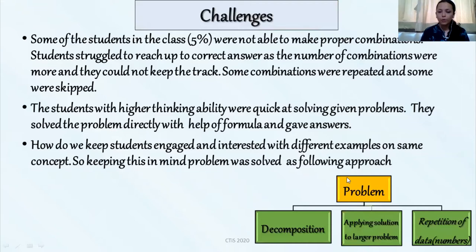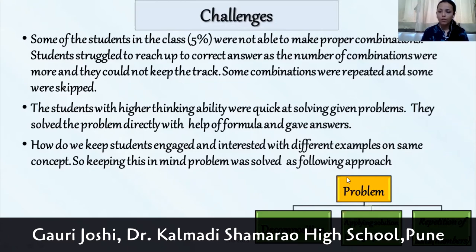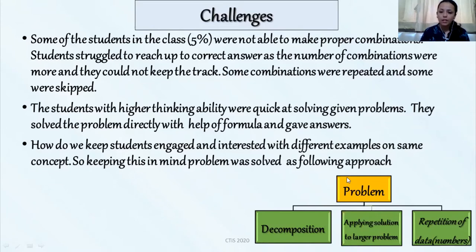While doing these particular examples, we came across different challenges. Some of the students were not able to do proper combinations. They couldn't keep track of how many combinations were done. Are these combinations repeated? Also students with higher order thinking skills, when a problem was put in front of them, they gave the answer immediately with the help of formula. So here computational thinking aspect was not focused. How do we keep the students engaged and how different examples can be designed keeping this particular concept in mind?